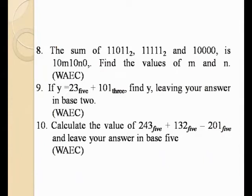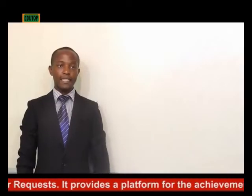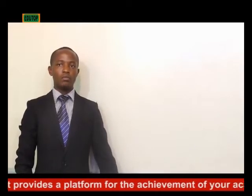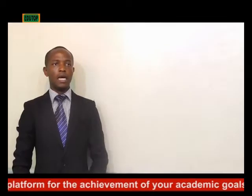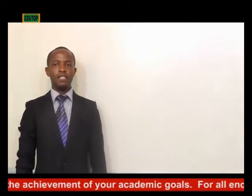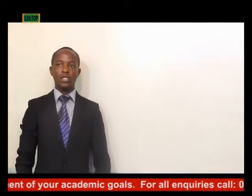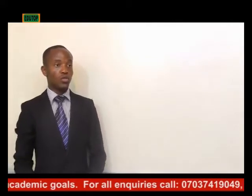Question number 8: The sum of 1, 1, 0, 1, 1 in base 2, plus 1, 1, 1, 1, 1 in base 2, plus a number with missing values M and N. So we are going to sum these three figures in base 2 and then look out for the missing values, which are M and N. That's what the question is actually asking us to solve.